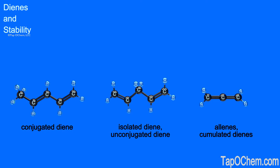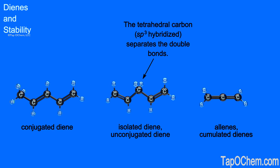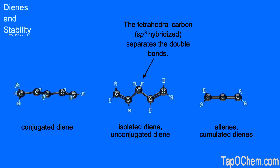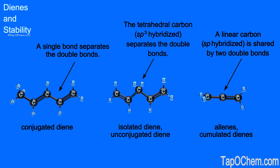On the screen, there are three types of dienes represented: a conjugated diene, an isolated diene, and an allene. An isolated diene is unconjugated and has carbon-carbon double bonds separated by at least one tetrahedral carbon. The conjugated diene has carbon-carbon double bonds separated by only a single bond. Allenes have two double bonds that share one carbon, which has linear geometry and is sp-hybridized. Allenes belong to the class of cumulated dienes. Since these compounds have different bonding, we should expect different stabilities.